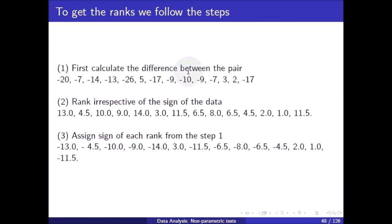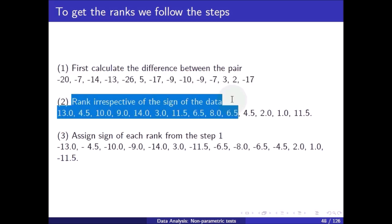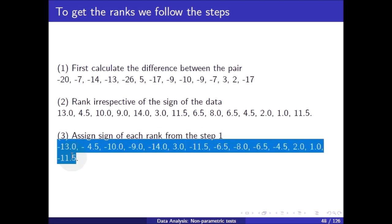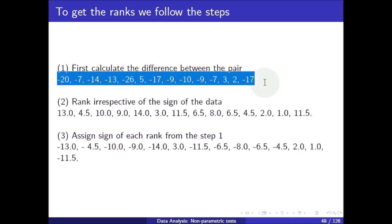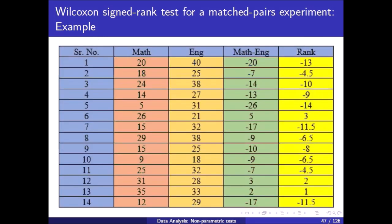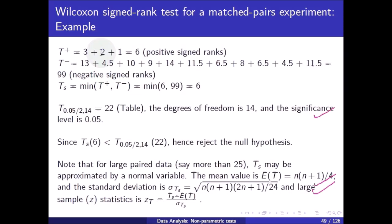First, calculate the differences between the pairs. These are the differences and the ranks assigned irrespective of sign. Then assign the sign of each rank based on the sign of the corresponding difference from step one. The positive-signed ranks are summed to give T plus.